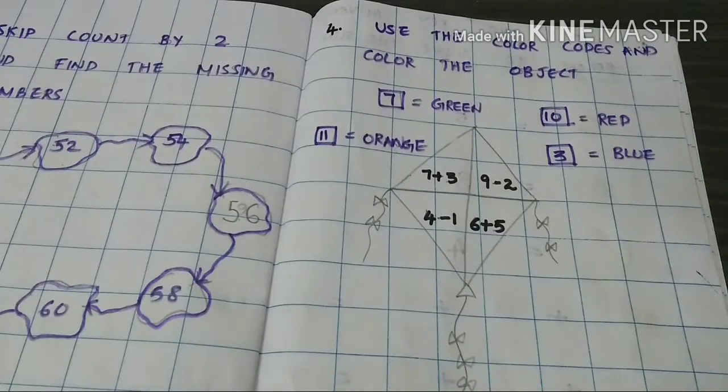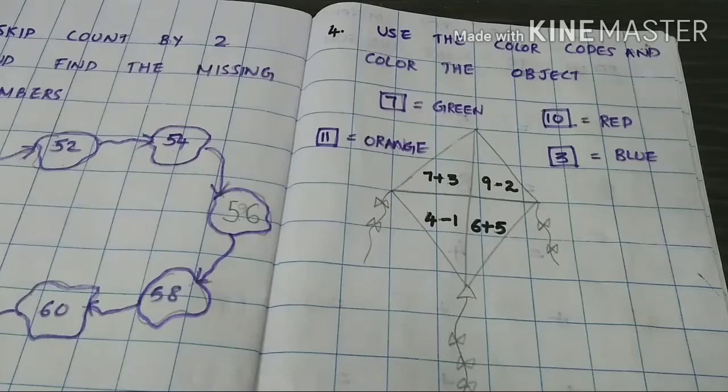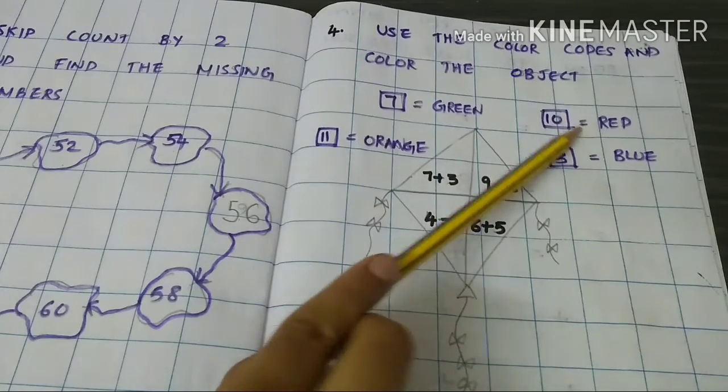Use the color codes and color the object. 7 plus 3, 8, 9, 10. So 10, so we have to color red.